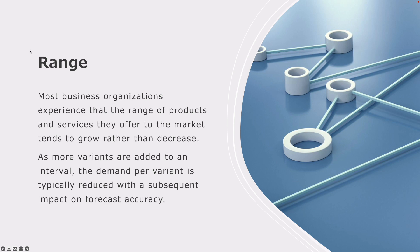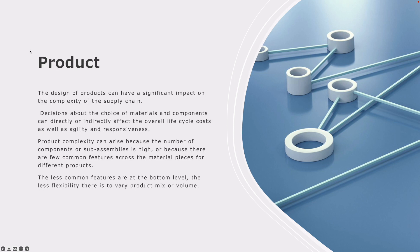So we have range. Most business organizations experience that the range of products and services they offer to the market tends to grow rather than decrease. As more variants are added to an interval, the demand per variant is typically reduced with a subsequent impact on forecast accuracy.